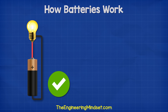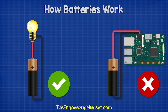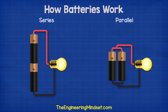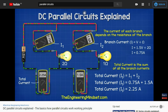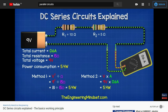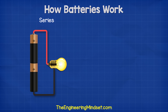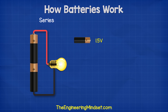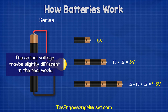We can use a battery to power components, but usually a single battery isn't enough to power our devices. For this we need to combine batteries, either in series or parallel. When we connect batteries in series, the voltage of each battery is added together — so two 1.5 volt batteries give us 3 volts, and three batteries give us 4.5 volts. The actual voltage may be slightly different in the real world.